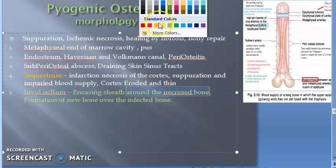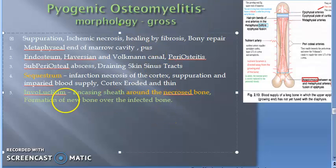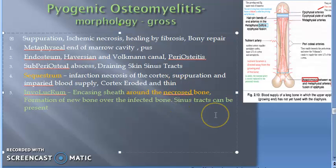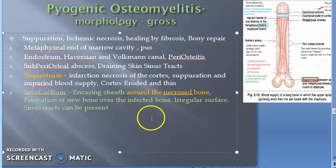The necrosed bone is called the sequestrum. This Involucrum forms because there is new bone formation over the infected bone. There can still be sinus tracts present. This Involucrum has an irregular surface and the sinus tracts can pass through these perforations.